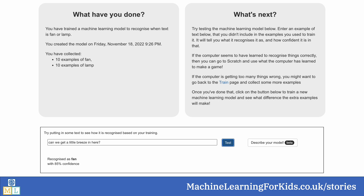Machine learning models don't just give an answer. They also typically return a score that shows how confident the system was that it correctly recognised the input. Knowing how to use that confidence score is an important part of using machine learning.